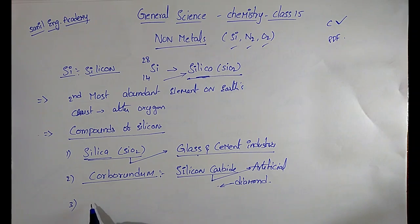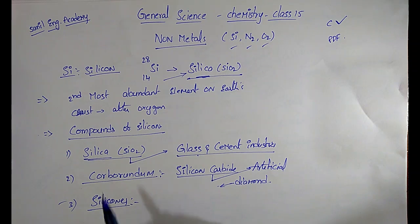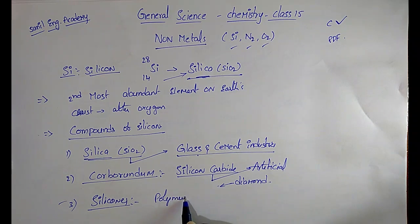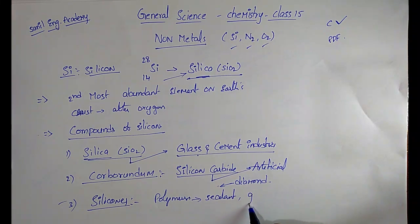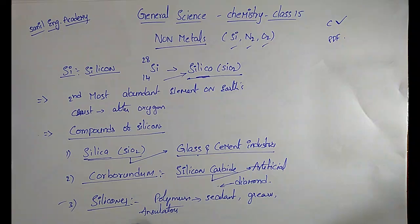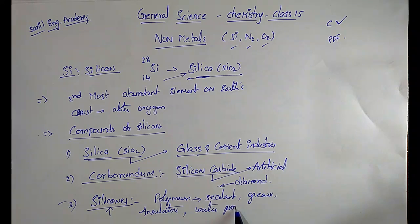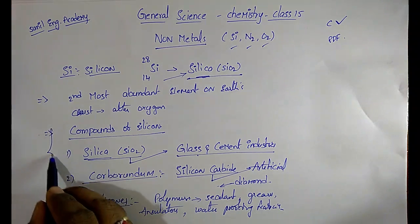The next compound is silicones. These are polymers used as sealants, greases, or insulators. They are used as electrical insulators because they do not allow electricity through them. They are also used for waterproofing fabrics.